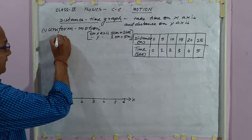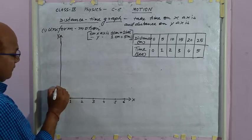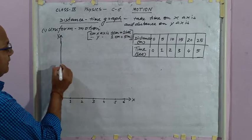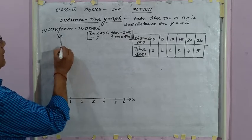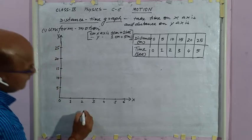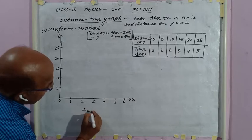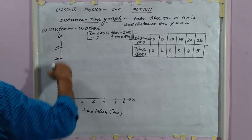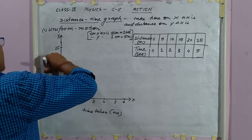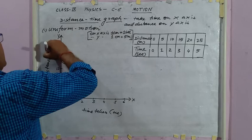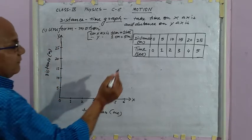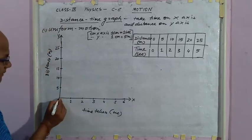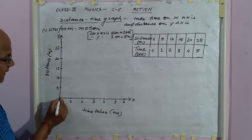And on the y-axis, we will mark 5, 10, 15, 20, 25, because this is the scale we have considered. This is time taken in seconds and this is distance covered in meters. Now we will see the data. Time 0 seconds, distance covered is 0, so we put a point here. This is 0 time and 0 distance.